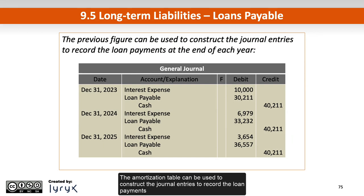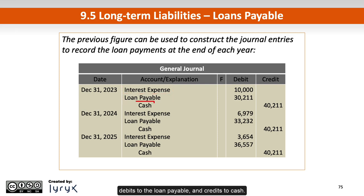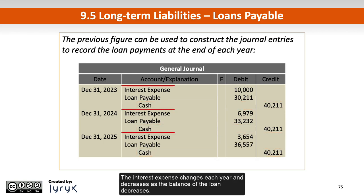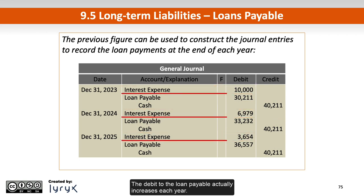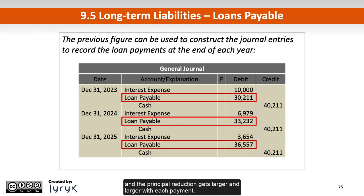The amortization table can be used to construct the journal entries to record the loan payments at the end of each year, with debits to interest expense, debits to the loan payable, and credits to cash. Notice the credit to cash is the same each year at $40,211 — the payment never changes. The interest expense changes each year and decreases as the balance of the loan decreases. The debit to the loan payable actually increases each year; this is what happens with a term loan like a car loan or mortgage — the interest portion of the blended payment gets smaller and smaller, and the principal reduction gets larger and larger with each payment.